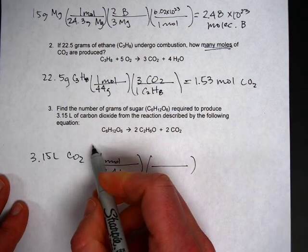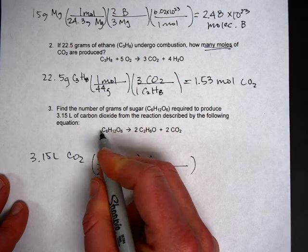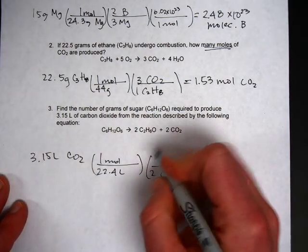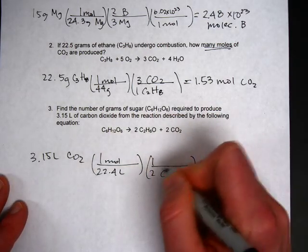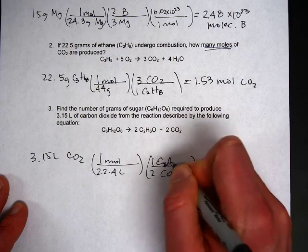And use the mole ratio. We're going from liters of carbon dioxide. So that's two of them. To grams of this sugar. So you'd have one mole of sugar on top. C6H12O6.